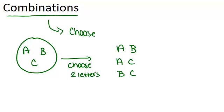Now what makes this different from a permutation is the order doesn't matter. So for example, AB means the same thing as BA because we're not thinking about the order of the letters, we're just thinking about the letters being there.